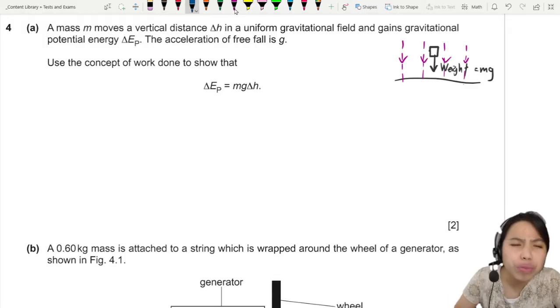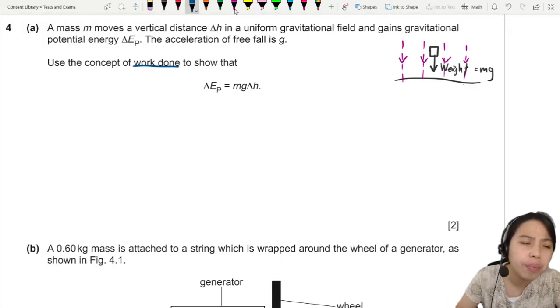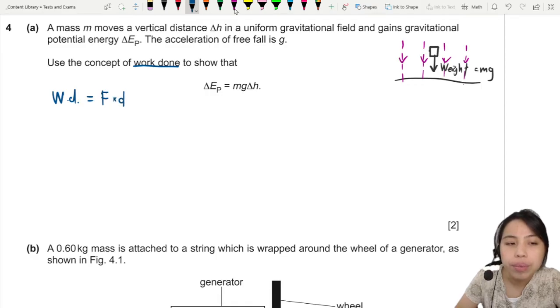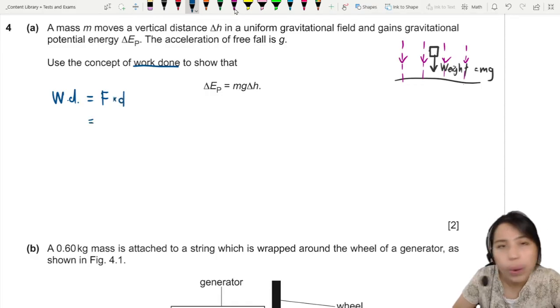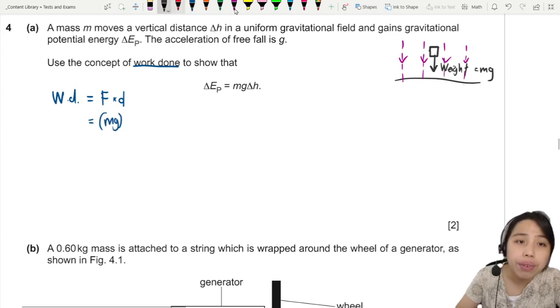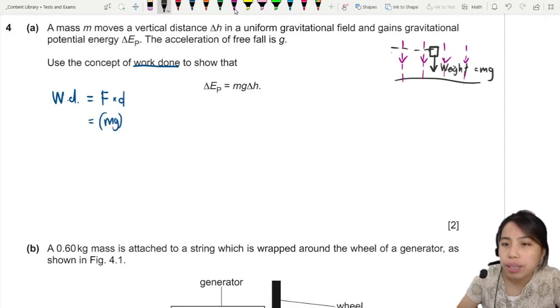So if you have to prove this, let's think of the concept of work done. Work done we use as force times distance, right? Force times distance. What's the force here? Wait! So I'm just going to say Mg. What's the distance? If I move an object from here all the way to the ground, that's a change in height, so that's delta H.